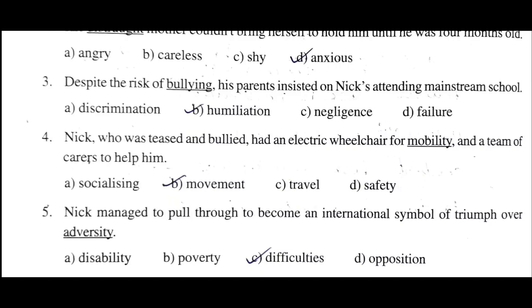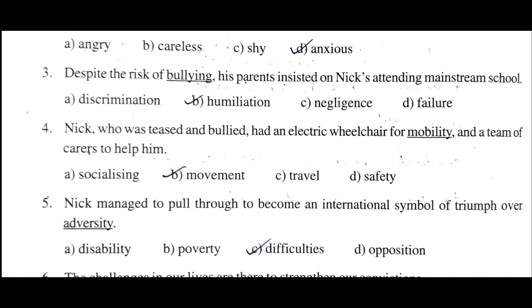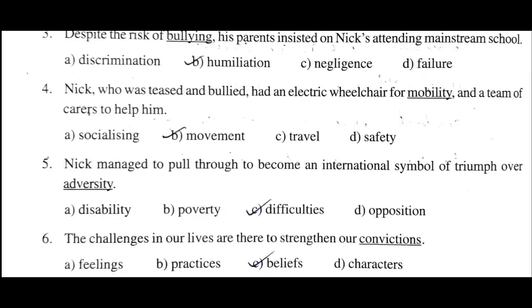Third sentence: 'Despite the risk of bullying, his parents insisted on Nick attending mainstream school.' Nick's parents insisted he attend mainstream school. Bullying means humiliation - harassment of others.